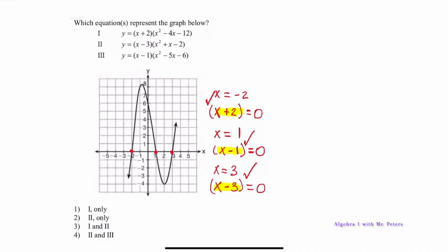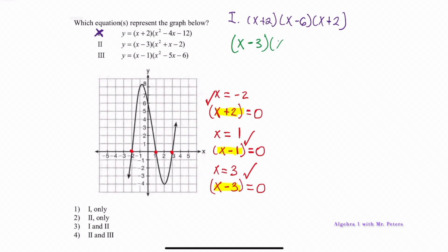When we simplify equation 1 we get (x + 2)(x − 6)(x + 2). This is incorrect because we don't have x − 3 or x − 1 as factors. For equation 2 we have x − 3 as the first factor, and then x² + x − 2 factors into (x + 2)(x − 1). Looking at these three factors compared to what we identified, all three match — so equation 2 is the correct answer.